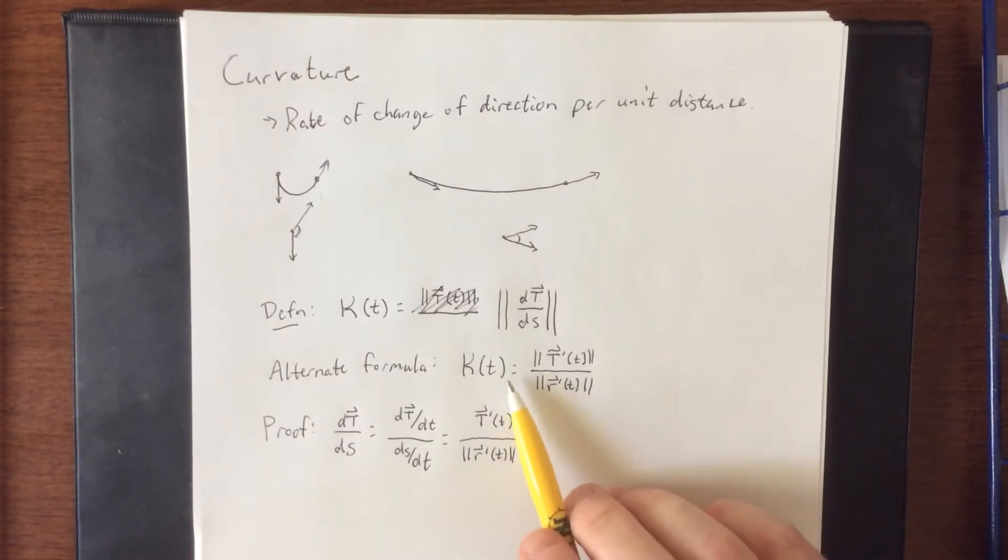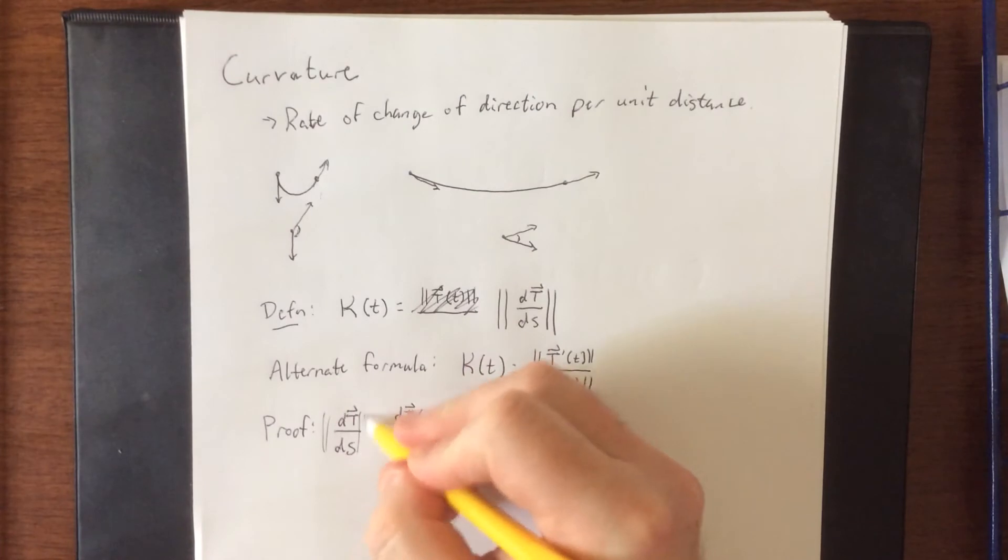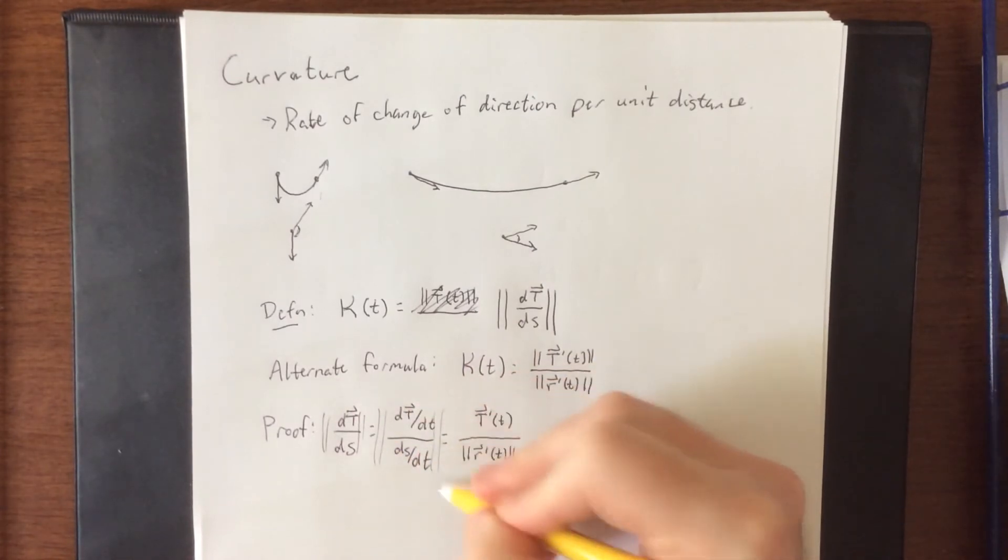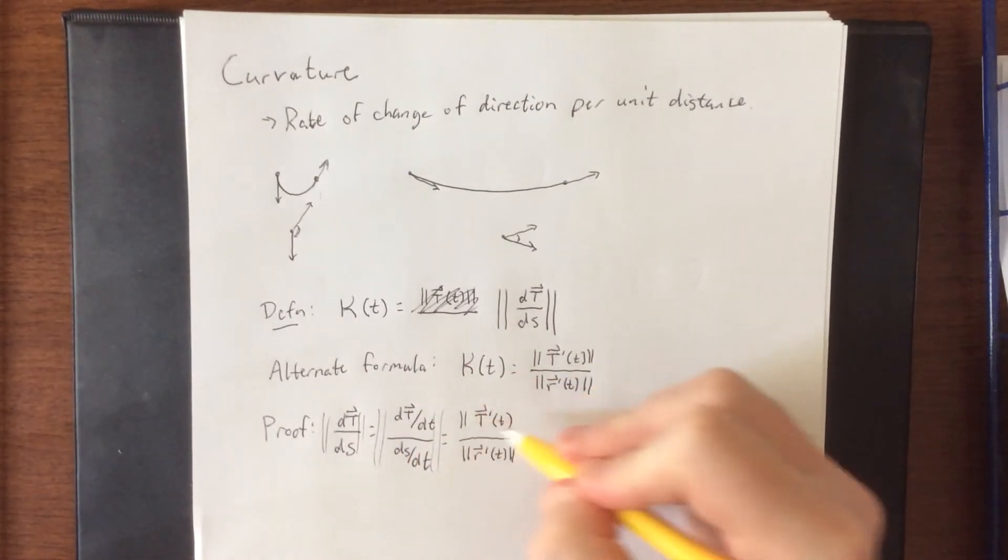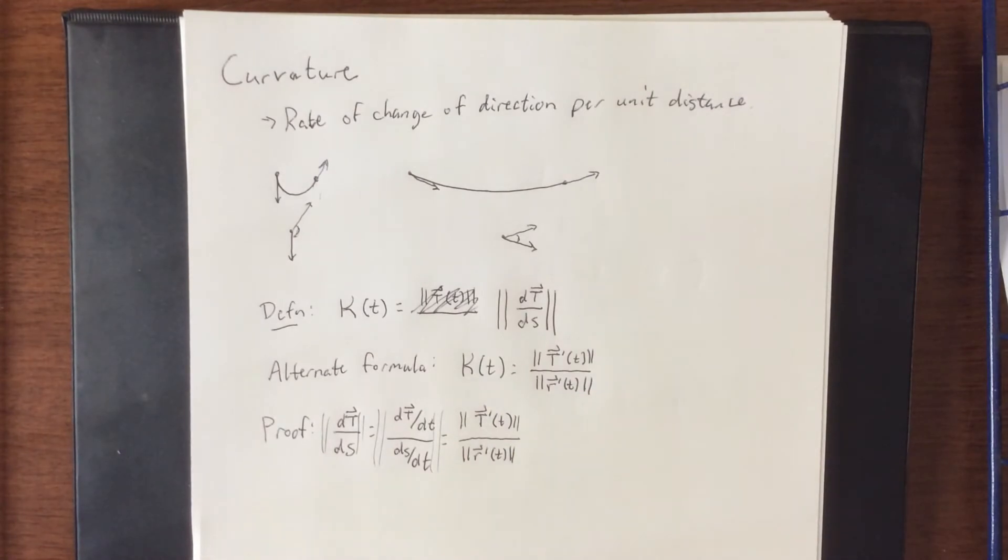In order to turn this into a scalar quantity, which is what curvature is, we would need to take the magnitude of this vector. Since we already distributed the magnitude to the denominator, we can simply do this.